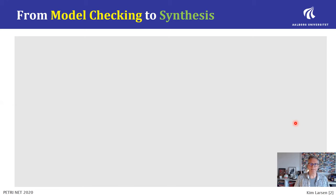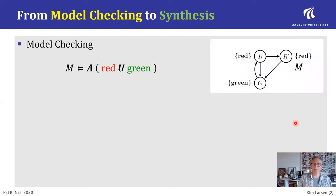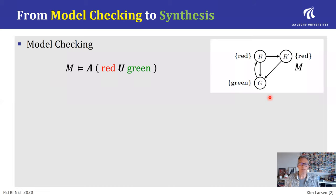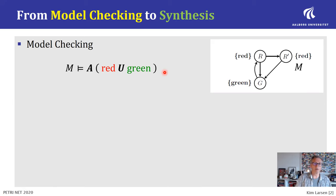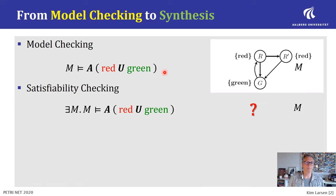Let's try to understand these concepts a bit more precisely. In model checking, we have a model — a Kripke structure — and a property, a temporal logic property, specifically a CTL property. The model checking problem is to decide whether the model actually satisfies the specified property.